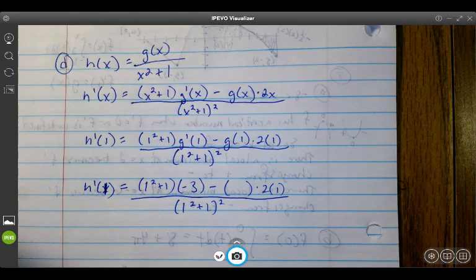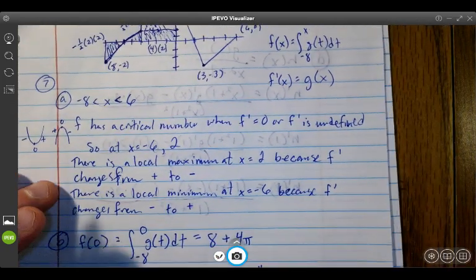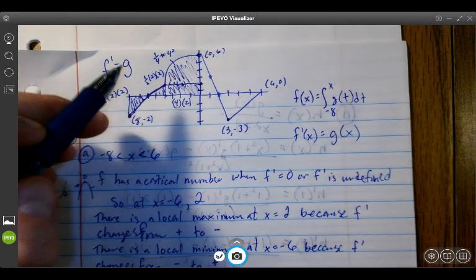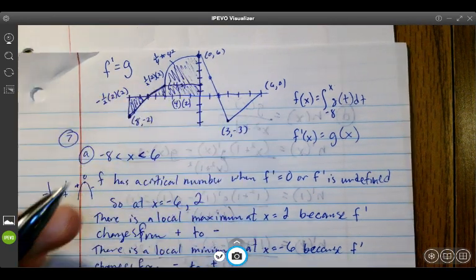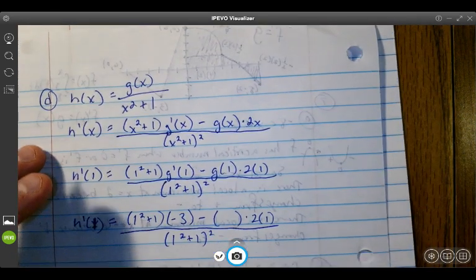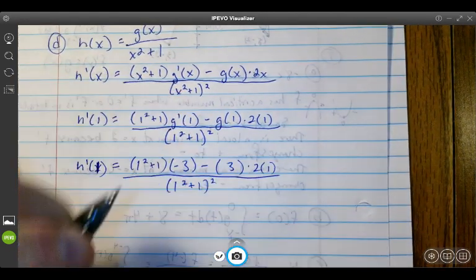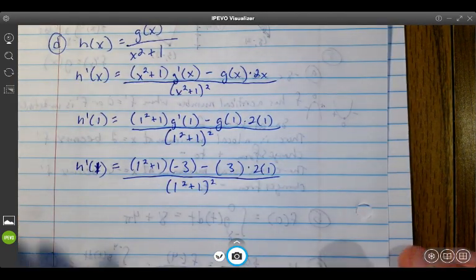Now what about g(1)? Remember, this is the graph of g. So g(1) would very simply be the y-value at x = 1. And so that y-value would be just positive 3. You could leave this as your answer.